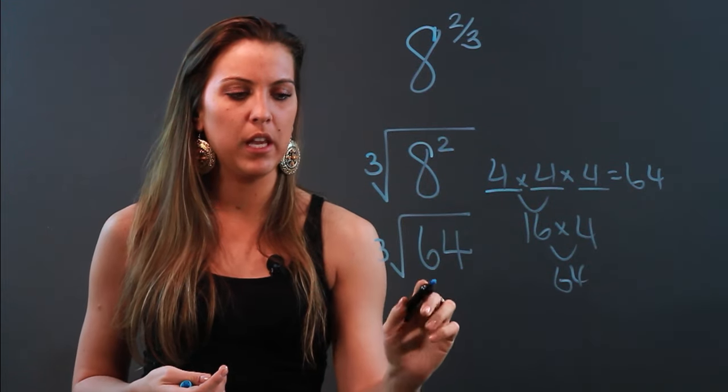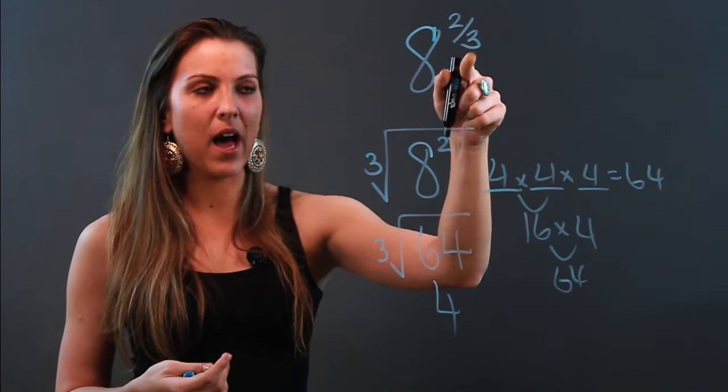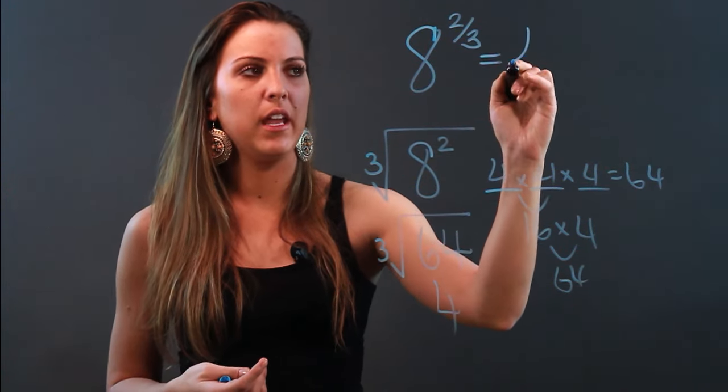So the cube root of 64 would be 4. So 8 to the two-thirds power ends up actually just being 4.